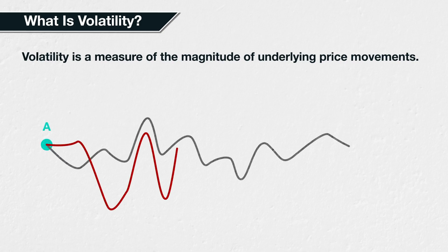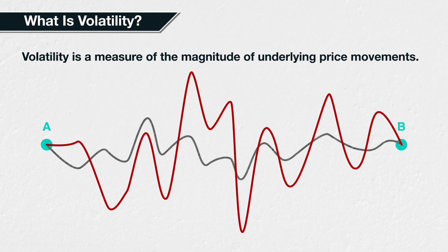Take these two lines, each representing the price of a different underlying asset. Both start at the same price and end at the same price, so they have both moved from A to B over the same time period. It is clear to see though that the grey line did so with far less volatility than the red line. We could say that red has been a more volatile asset than grey over this time period, and indeed we can measure this.